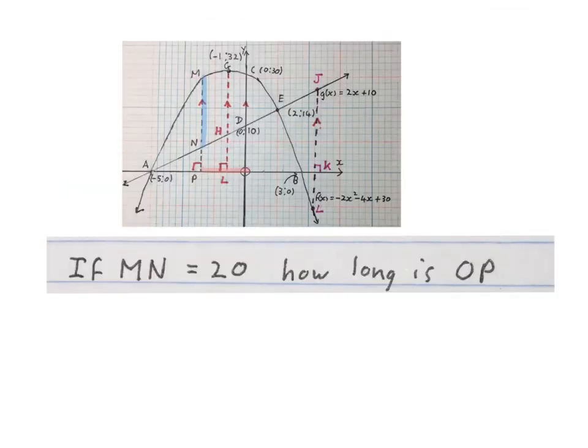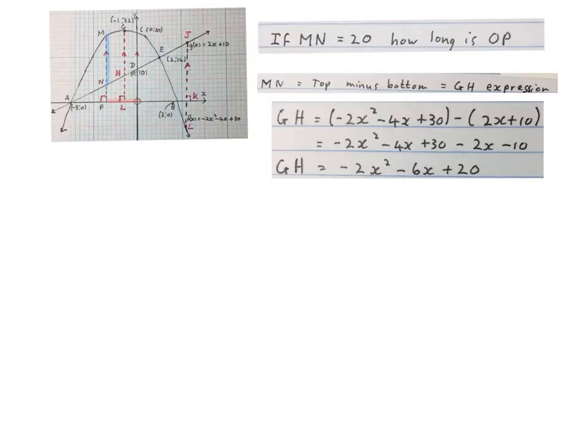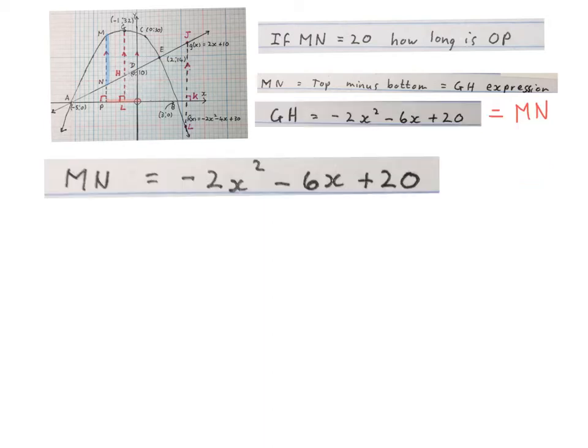The next question says if MN is equal to 20 units, how long is OP? So that blue line is 20 units, how long is that red line? Now to get an expression for the length of MN, it's also going to be top minus bottom. But that's the same as what we did for GH. We took the top, which is the parabola, minus the straight line and got the answer -2x² - 6x + 20. Both MN and GH will use this expression. So now we can start.